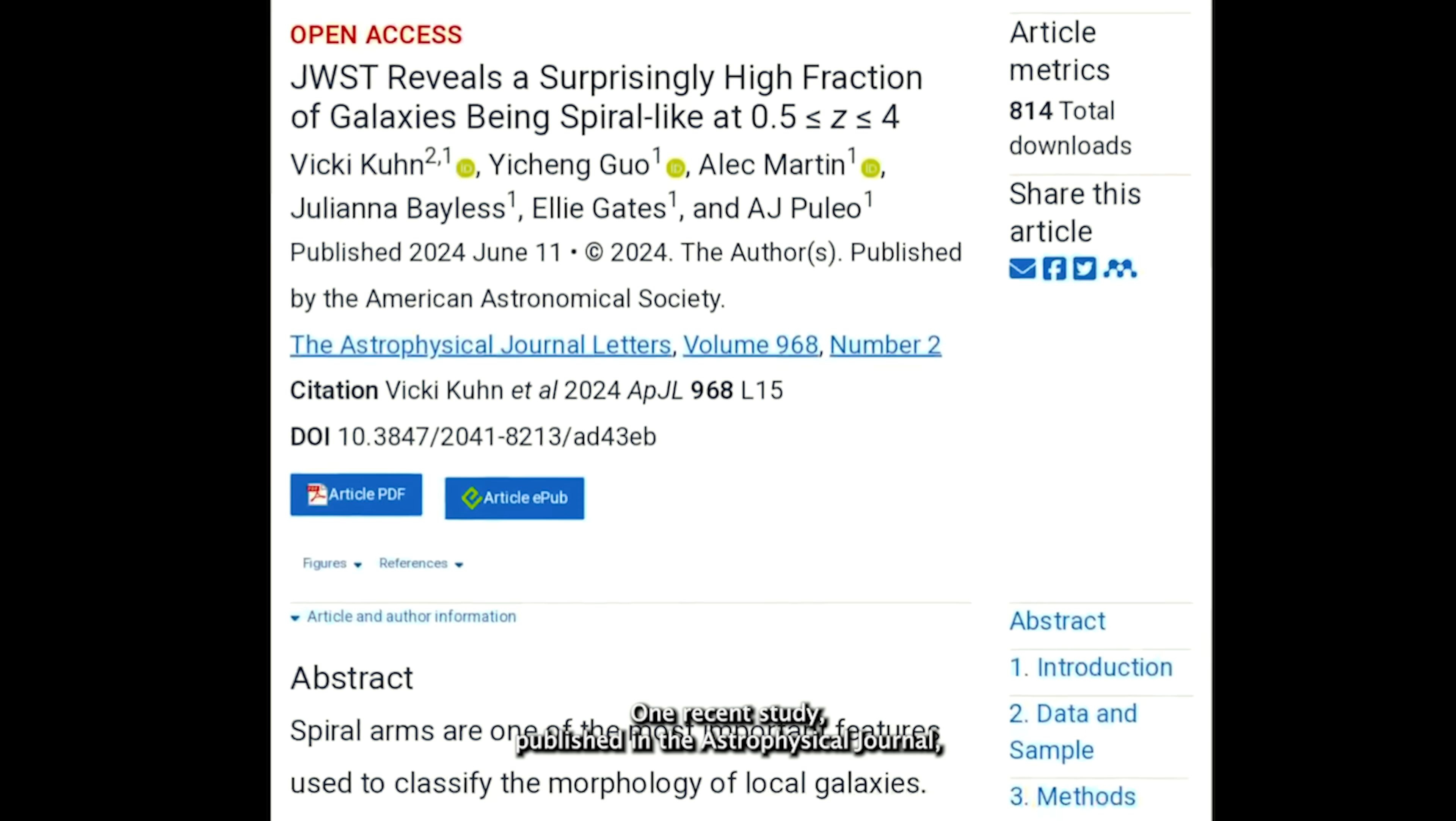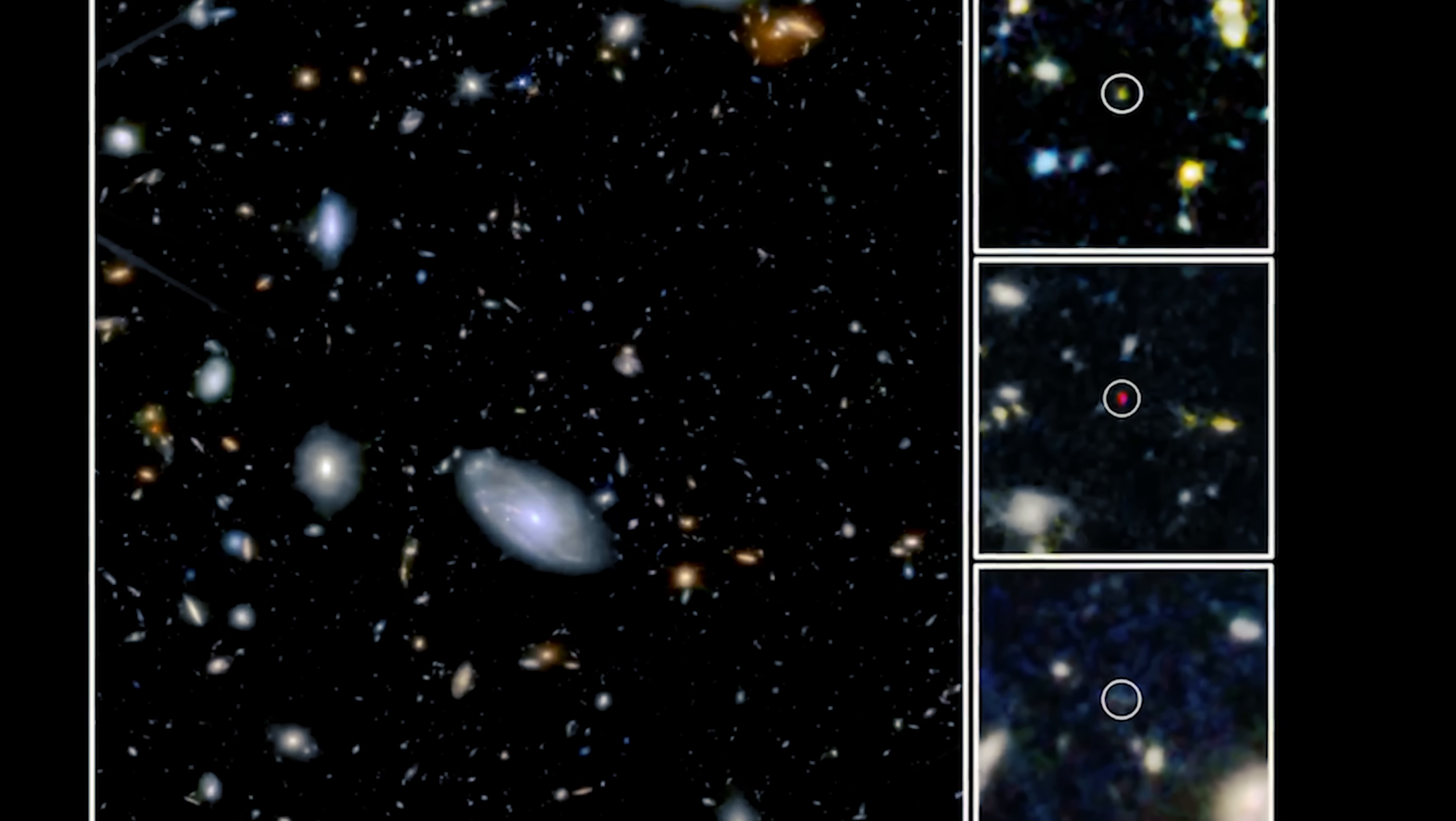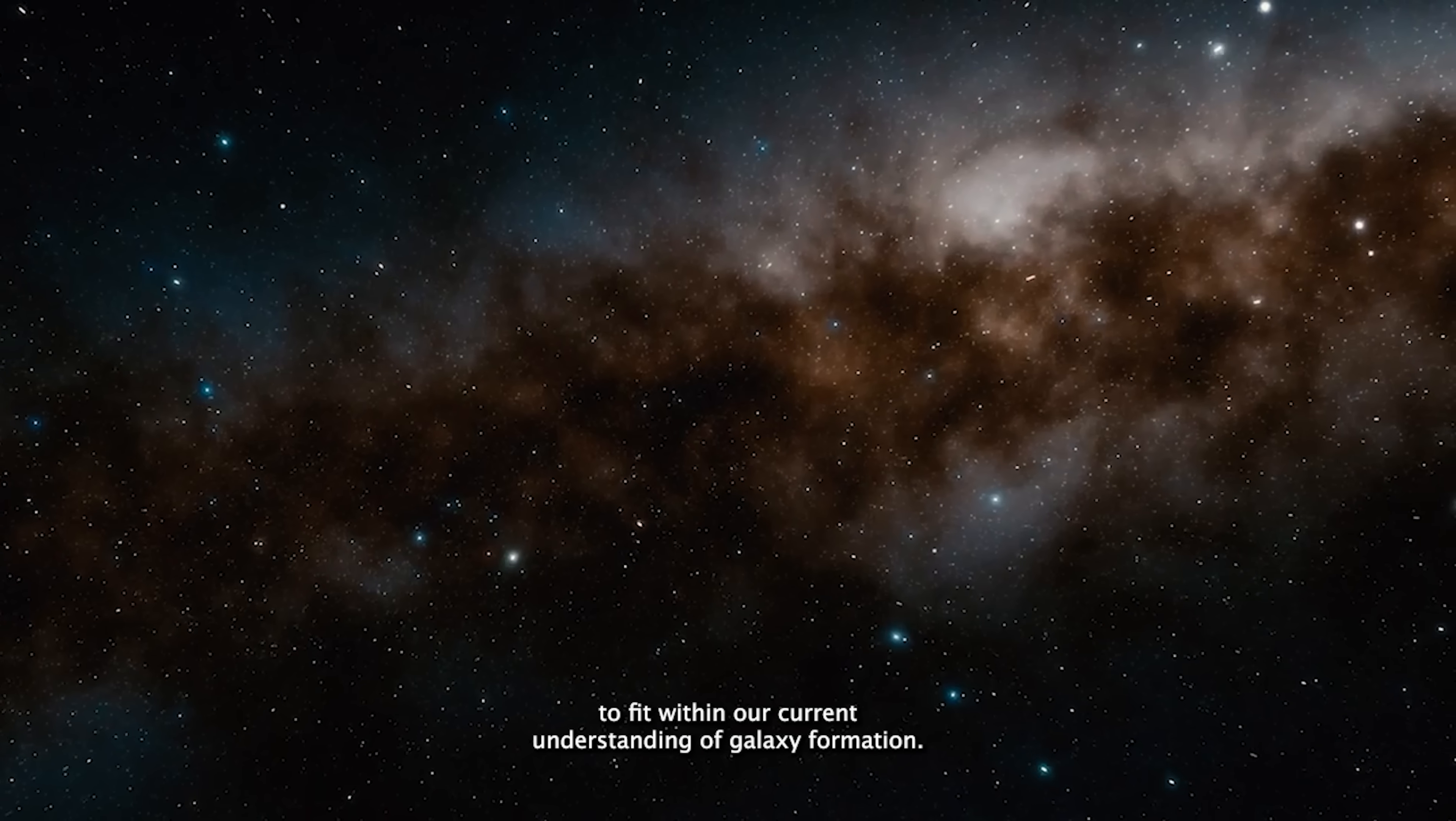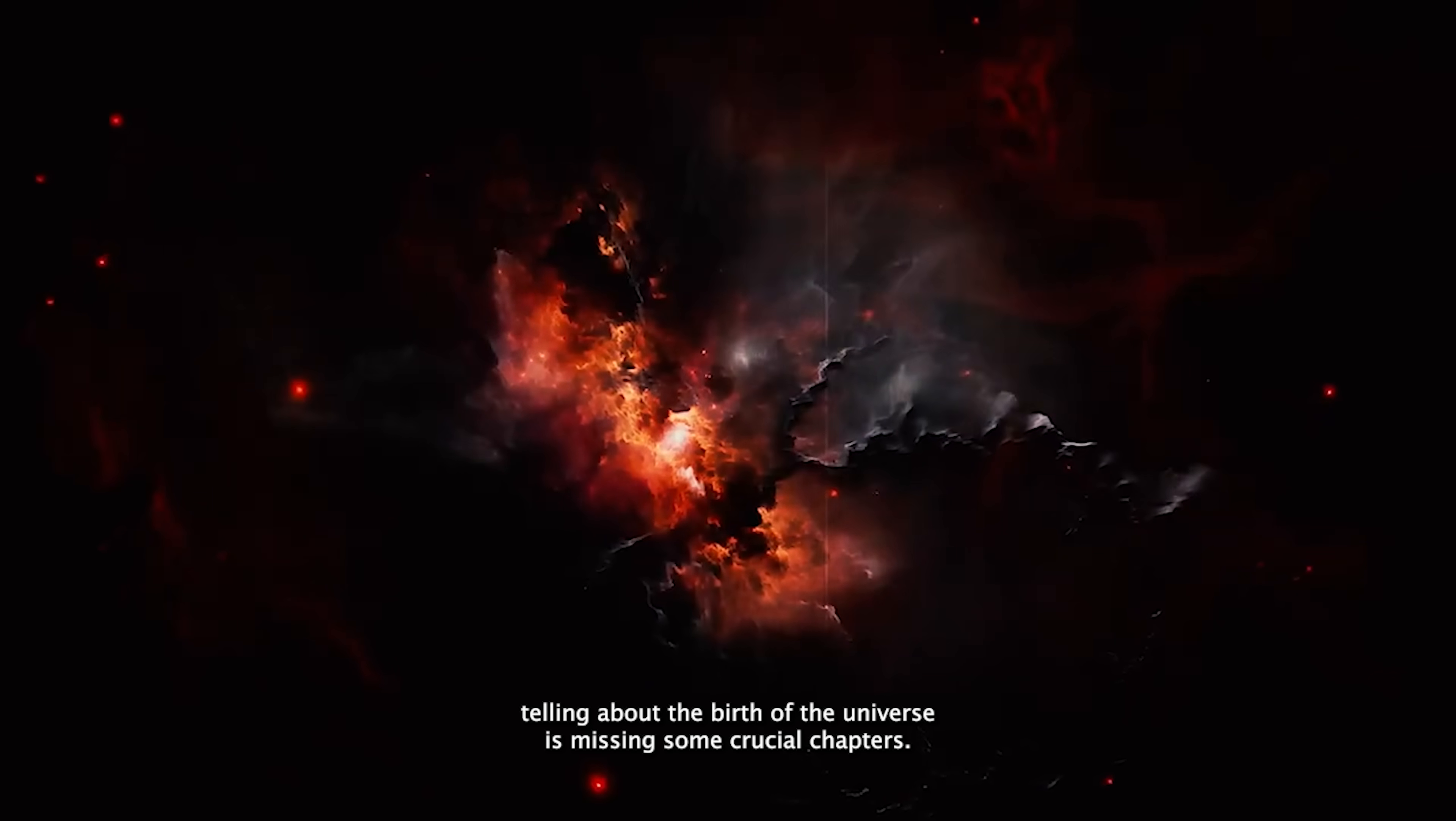One recent study, published in the Astrophysical Journal, reported the detection of 87 galaxies that may have existed only 200 to 400 million years after the Big Bang. That's way too early and way too bright. These objects are too organized, too massive, and too luminous to fit within our current understanding of galaxy formation. So what are they? Galaxies on fast forward? Something completely new? Or a sign that the story we've been telling about the birth of the universe is missing some crucial chapters.